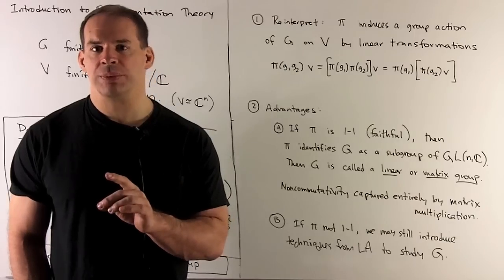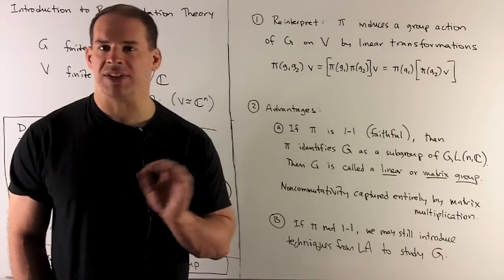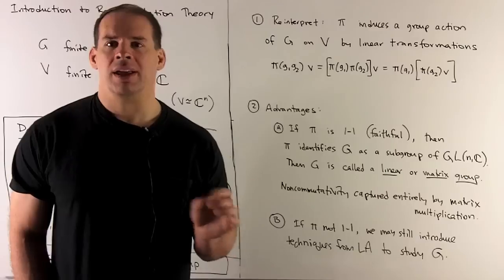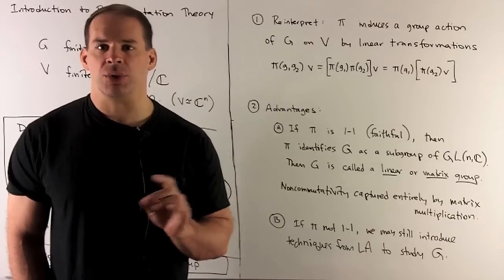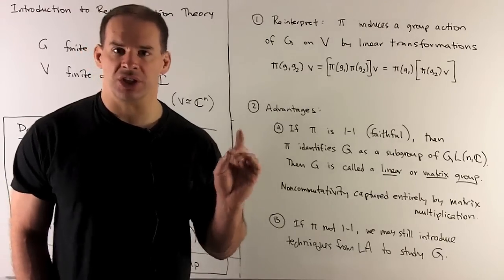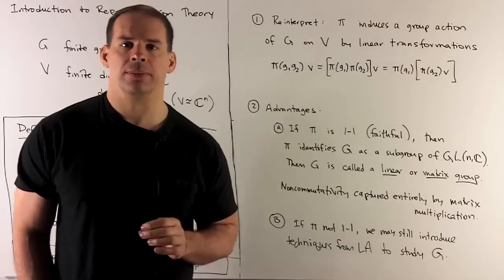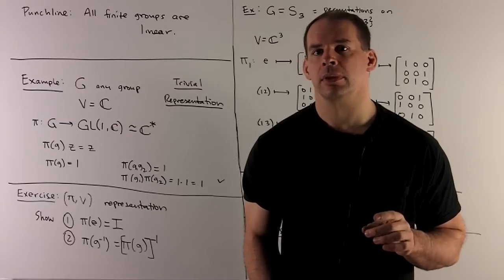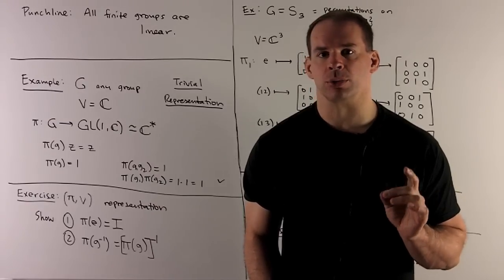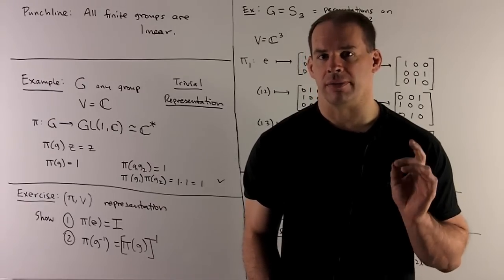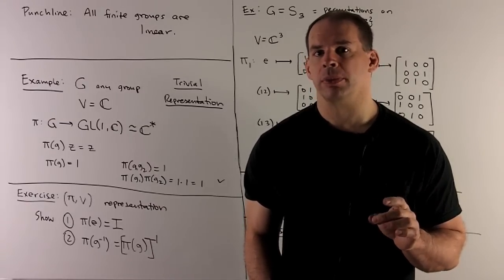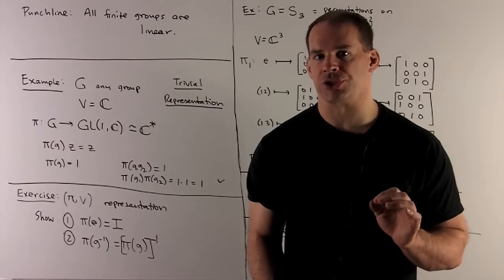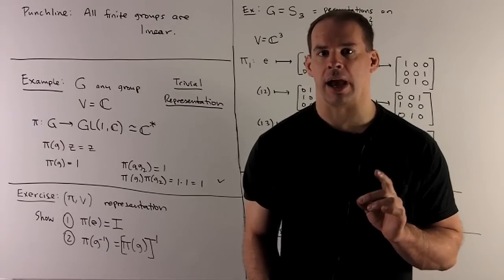Another advantage: if your π is not one-to-one, that's not the worst thing in the world — it's still going to allow us to use techniques of linear algebra to study G. Punchline for later: all finite groups are linear. So if we have a finite group, we can always represent it as a group of invertible matrices.